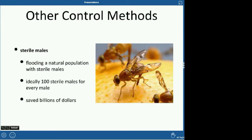Another control method is using sterile males, which is a funny but clever approach. They flood the population with sterile males — for example with mosquitoes, they might release 100 sterile males for every real male in the population. Female mosquitoes then have a 100-to-1 likelihood of mating with a sterile male. Their eggs become useless and won't hatch, so the population naturally declines as females continually mate with sterile males. This technique has actually saved billions of dollars.